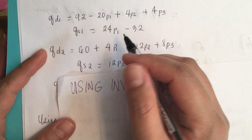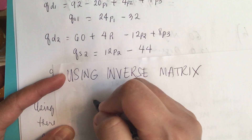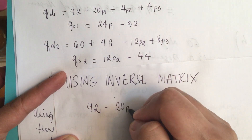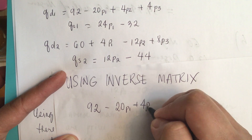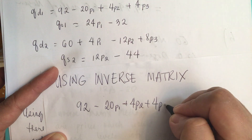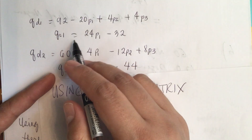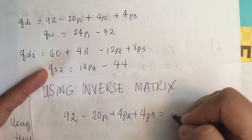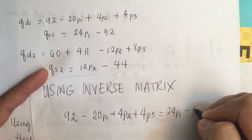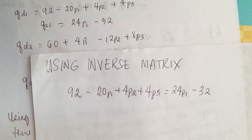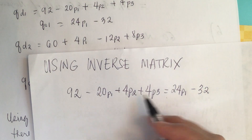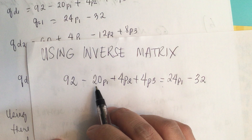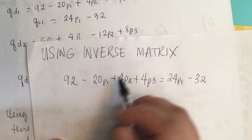For model one, we have the demand: 92 minus 20p1 plus 4p2 plus 4p3. At equilibrium, this must equal the supply, which is 24p1 minus 32. We rearrange: bringing 24p1 to the left side, minus 20 minus 24 gives minus 44p1.